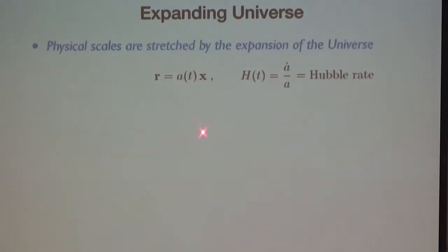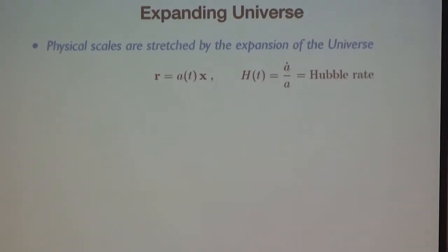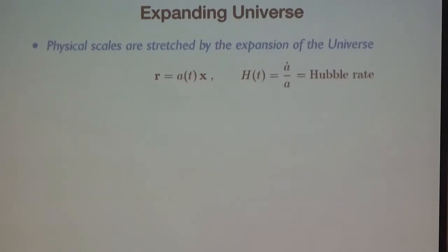Physical scales are only defined at a given time. You cannot define a physical distance between two events in the universe if they did not occur at the same time. To compute such a distance, you first compute the comoving separation between the two events, then multiply by the scale factor to translate it into a physical distance at a given time t. The comoving coordinate X is generally a function of time because our universe is not homogeneous and isotropic at small scales — objects move, so their comoving position changes.